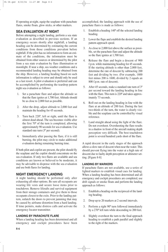Night emergency landing should be performed only after exhausting all other options. Be sure all occupants are wearing life vests and secure loose items prior to touchdown. Remove life rafts and survival equipment from storage containers and give them to occupants closest to the exits. Prior to the landing pattern turn, unlatch doors to prevent jamming from airframe distortion due to a hard landing. If time permits, make distress calls and activate the emergency locator transmitter. When a landing heading has been determined and all emergency and cockpit procedures are accomplished, the landing approach using parachute flares begins as follows: establish a heading 140 degrees off the selected landing heading, lower the flaps and establish the desired landing pattern approach speed, and as close to 2,000 feet above the surface as possible, set the parachute flare adjusted to ignite at 1,700 feet.